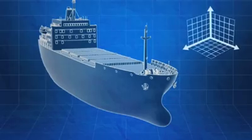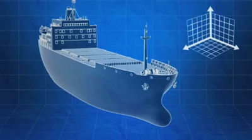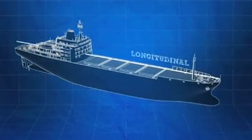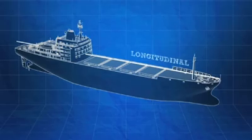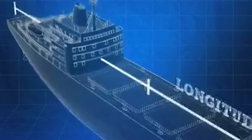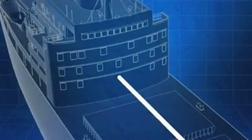Distances onboard ships are measured in one of three directions: longitudinally, transversely, and vertically. Longitudinal is the horizontal direction along the length of a ship. Longitudinal distances are measured from one of three places: the forward perpendicular, the aft perpendicular, or midships. Where longitudinal measurements are taken from will vary from ship to ship.